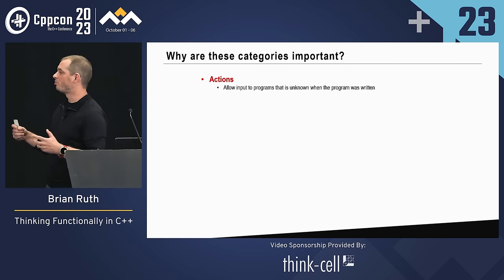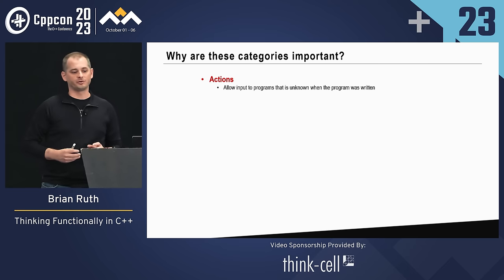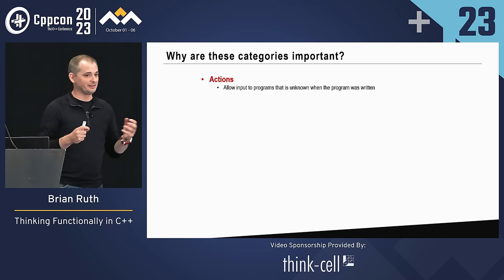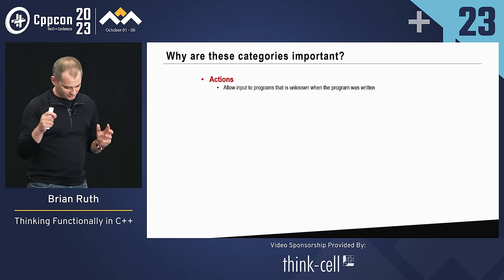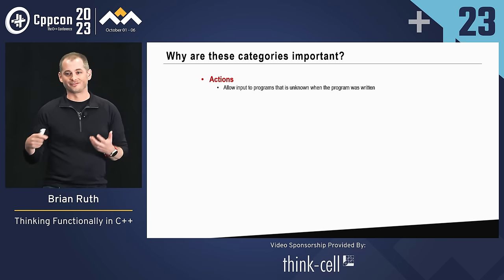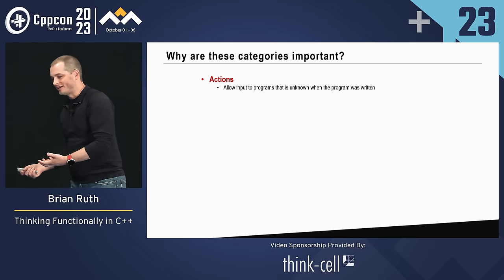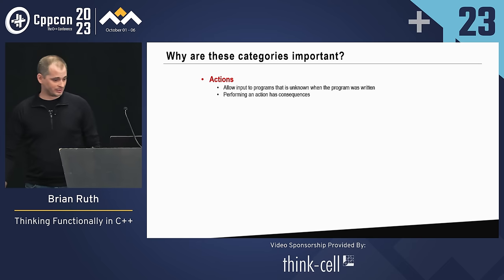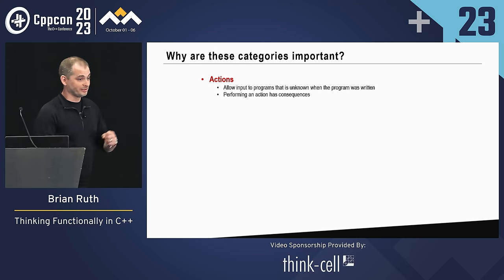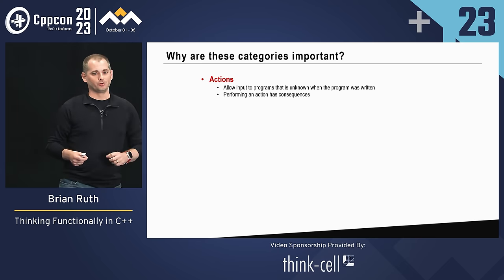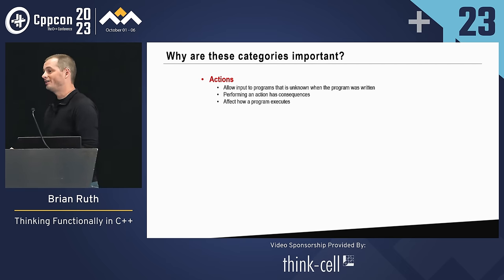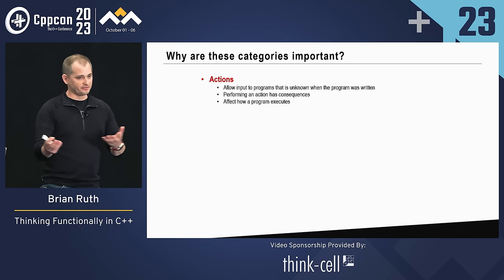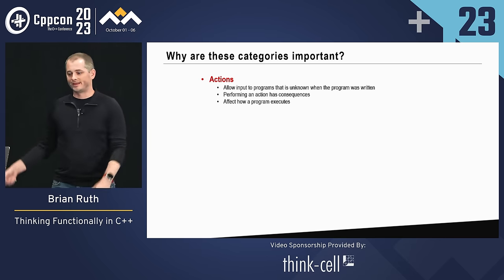Why are these categories important? Actions are necessary for programs to run or do anything useful. The concept that functional programmers don't ever have side effects is wrong — you can't write a program without side effects, but you want to identify those side effects so you know when they happen and can do it in a controlled manner. Performing an action has consequences — you don't want things to happen when you're not ready. They affect how a program executes based on user input or reading data from a sensor.